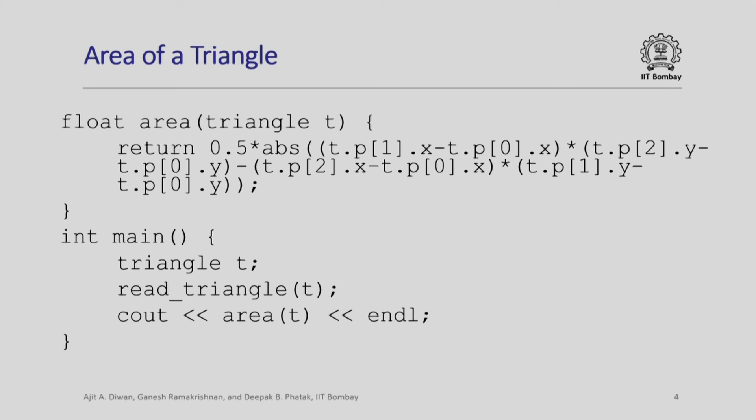Now this is the area function. We need to define how to compute the area of a triangle. From your geometry classes you would know some formulas for computing the area. This function uses the coordinates of the three corner points of the triangle, computes the area, and returns it. The main function simply calls the read triangle function, then calls the area function for that triangle, and outputs the area.